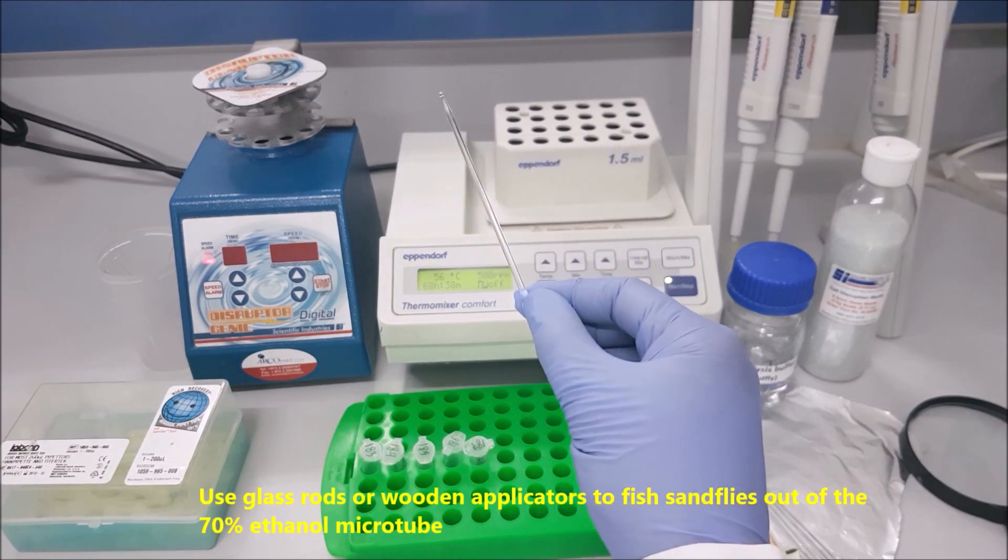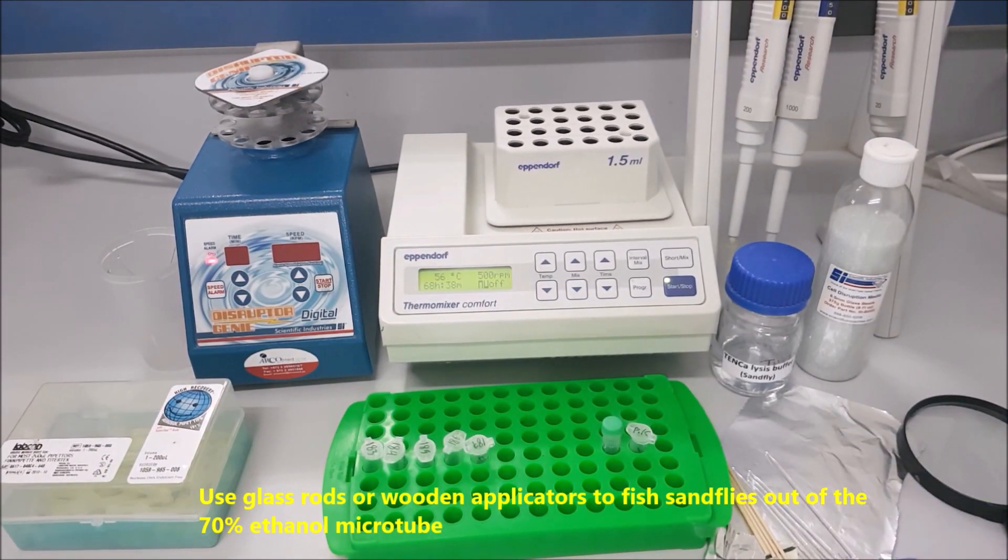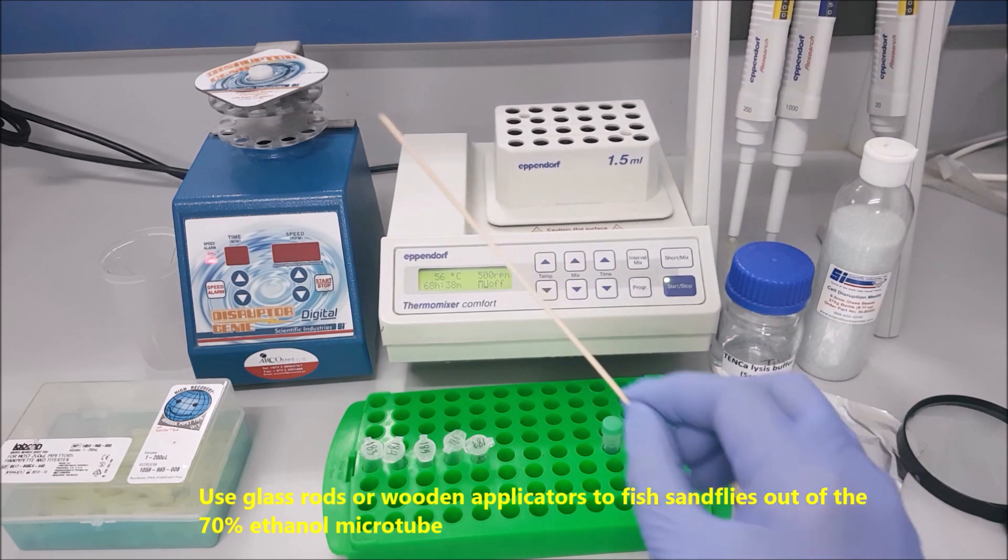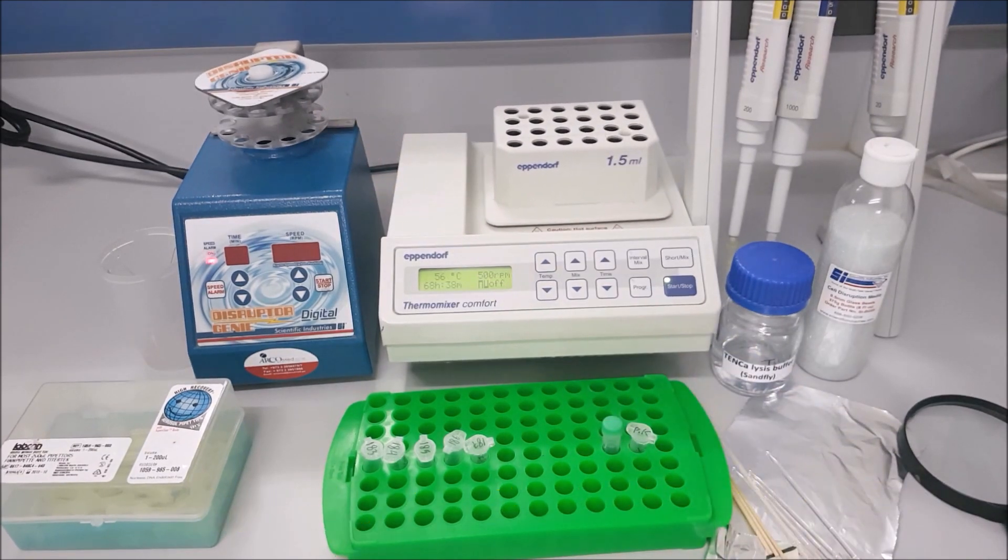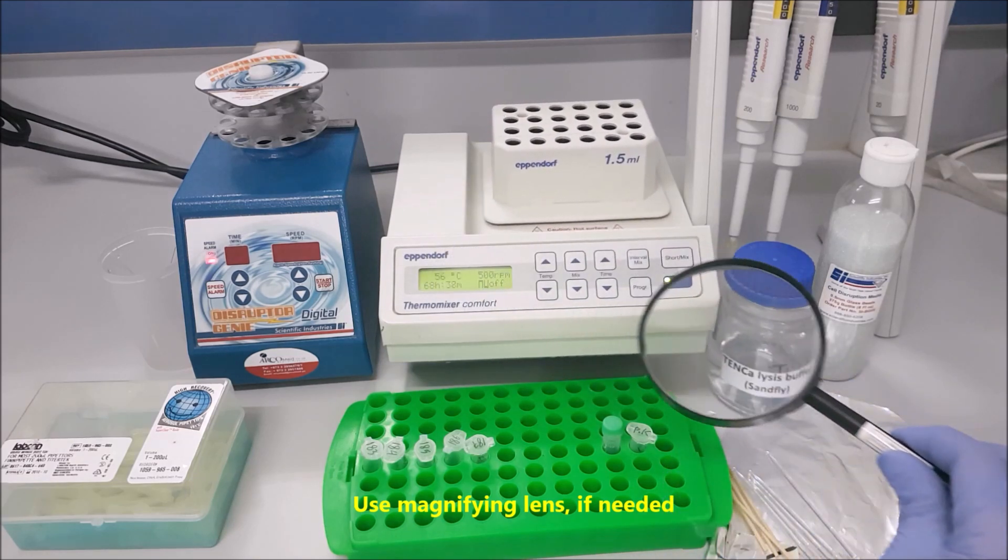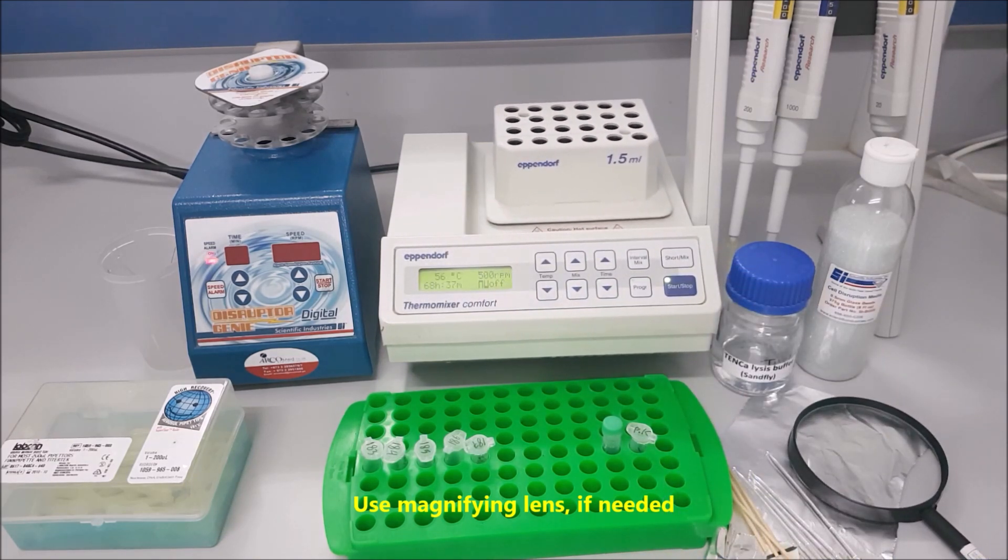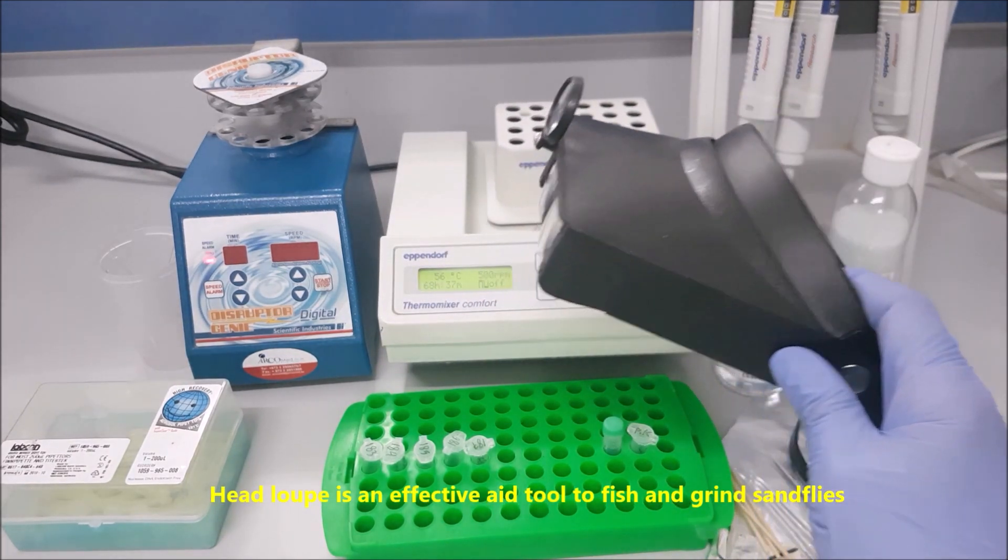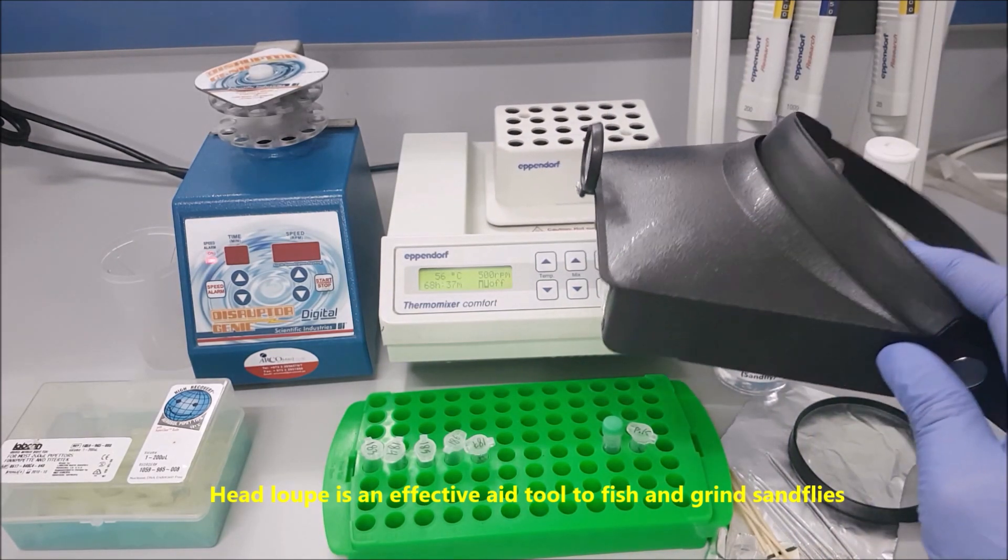Use glass rods or wooden applicators to fish sand flies out of the 70% ethanol microtube. Use magnifying lens if needed. Head loop is an effective aid tool to fish and grind sand flies.